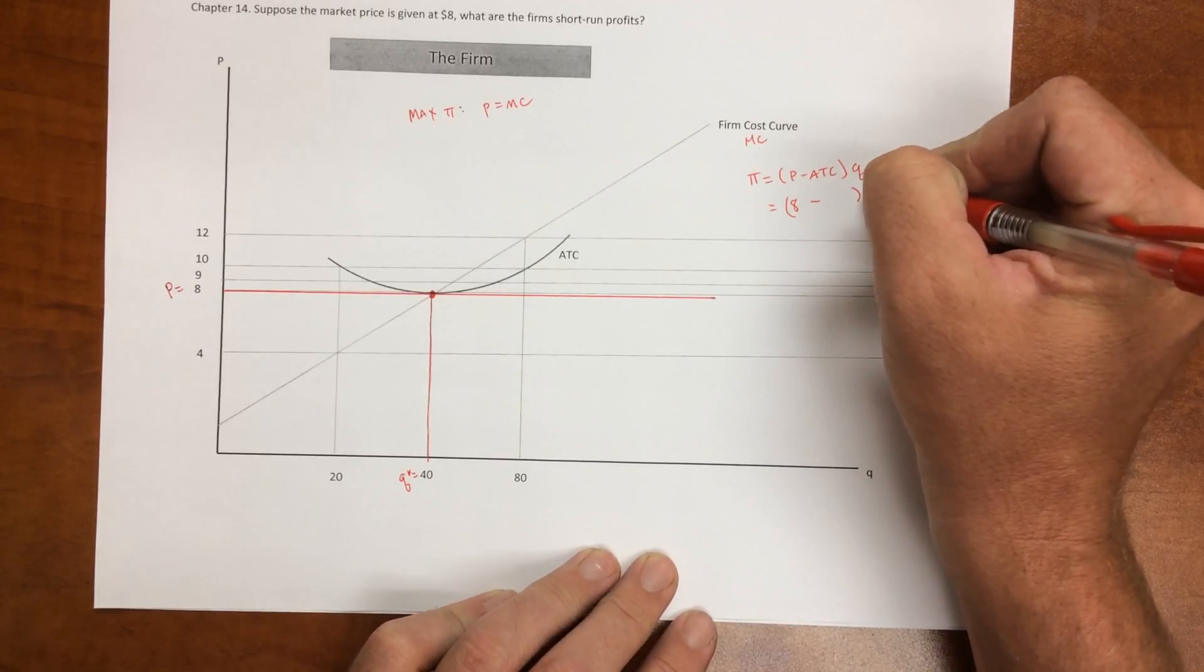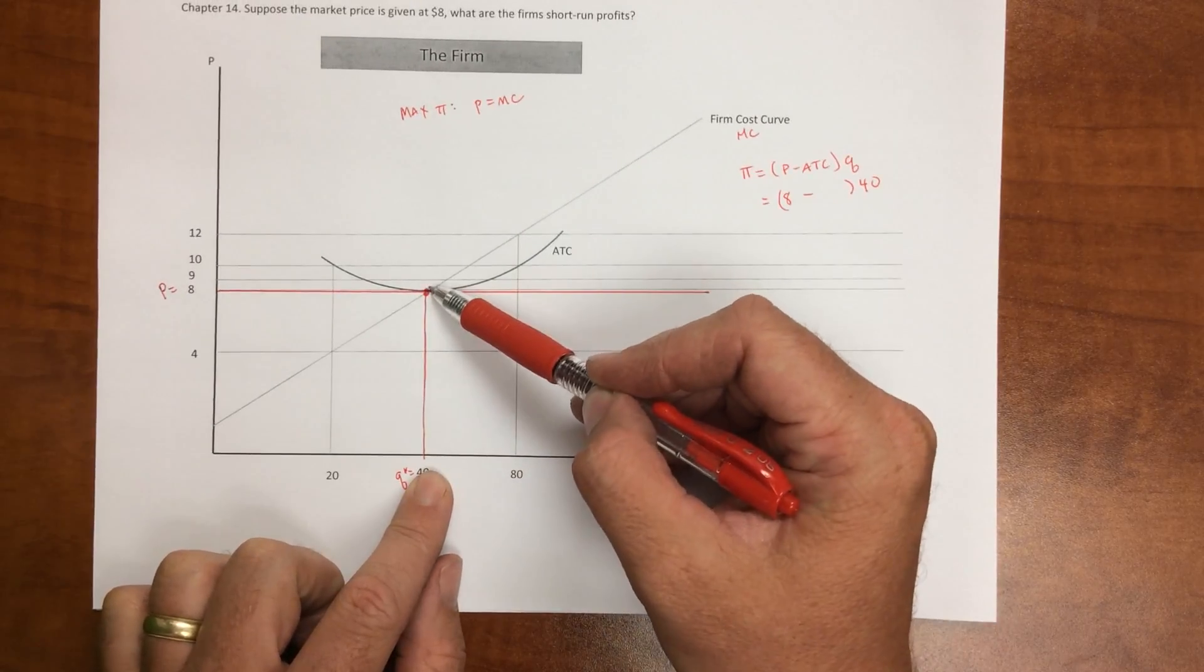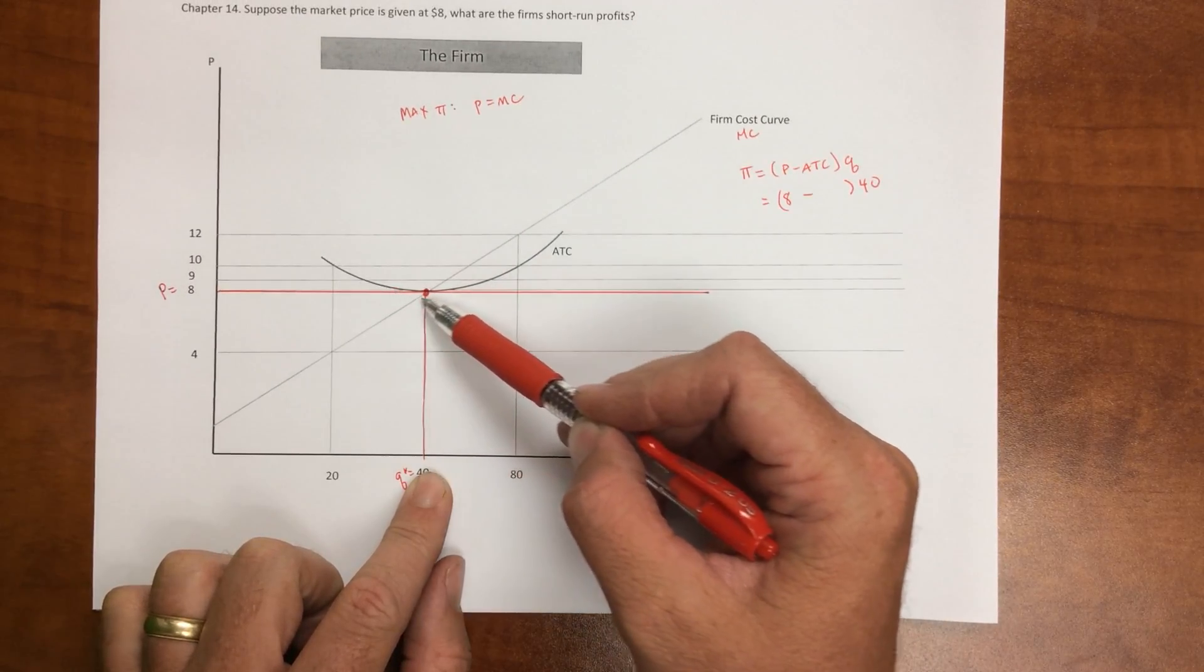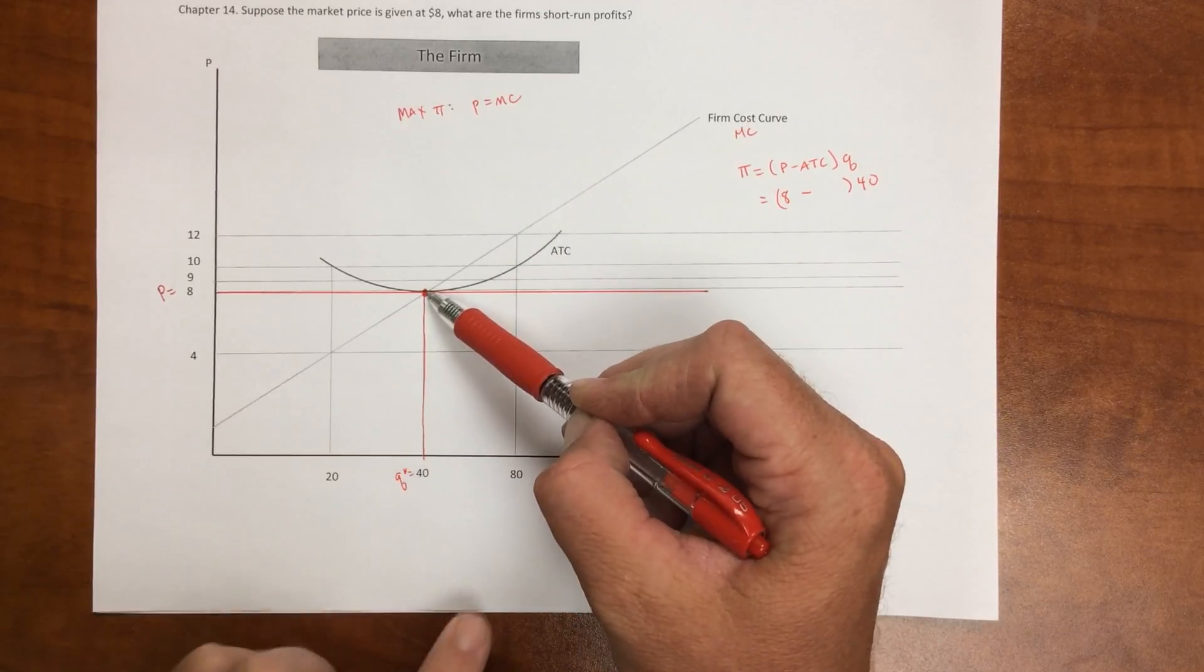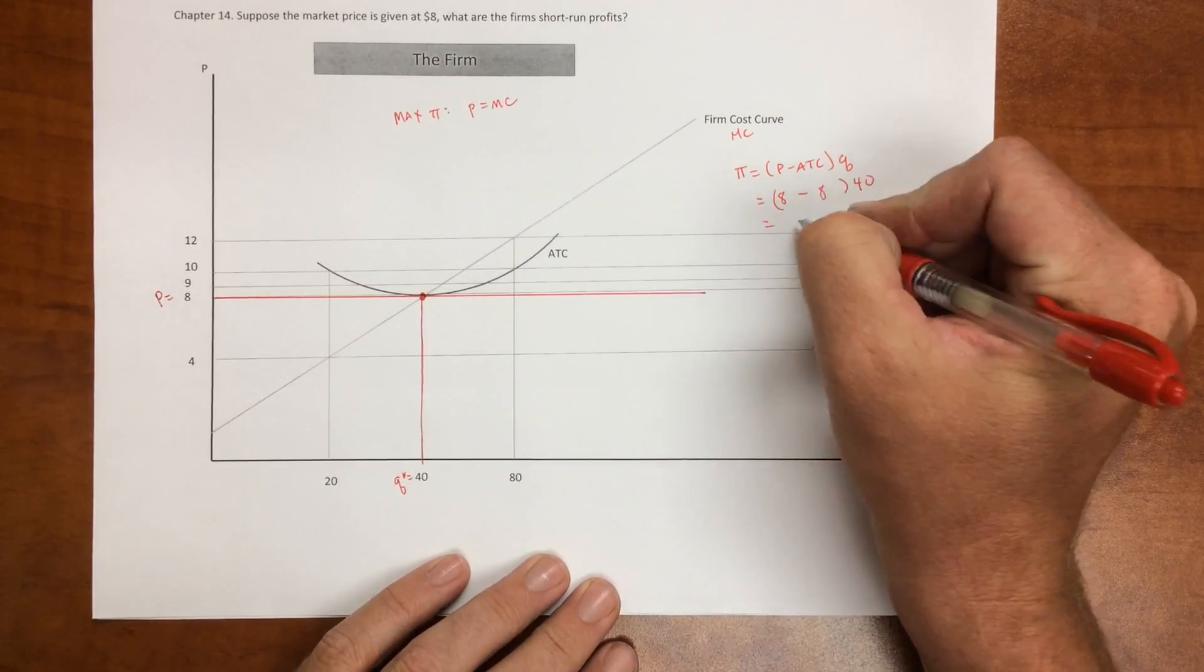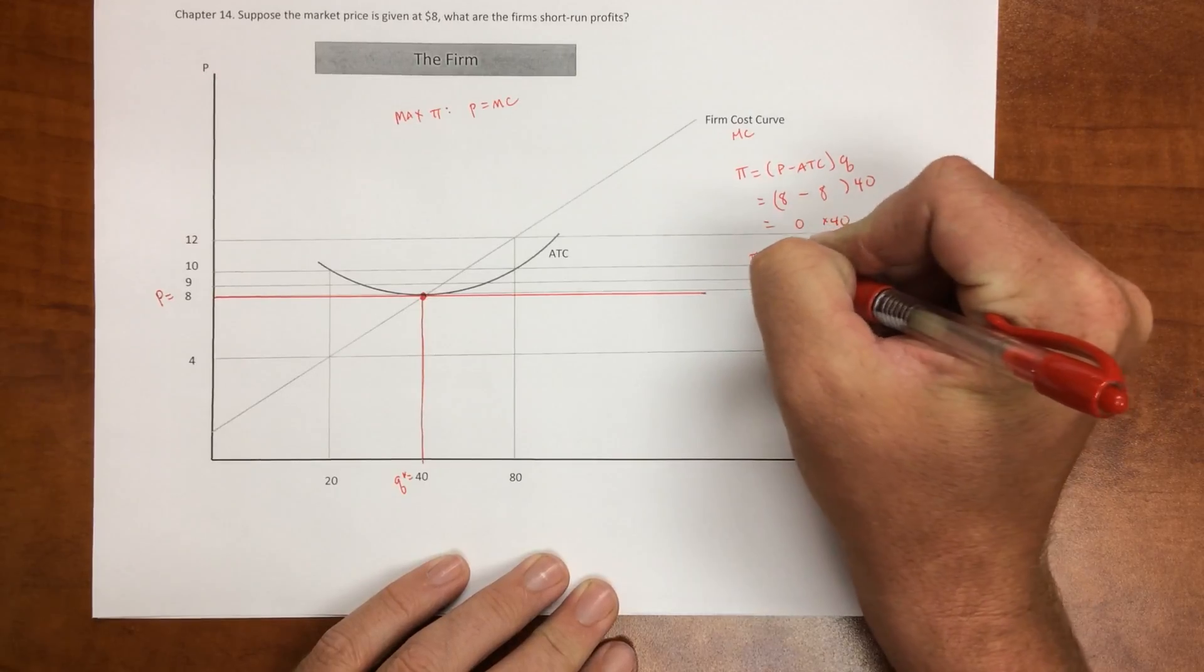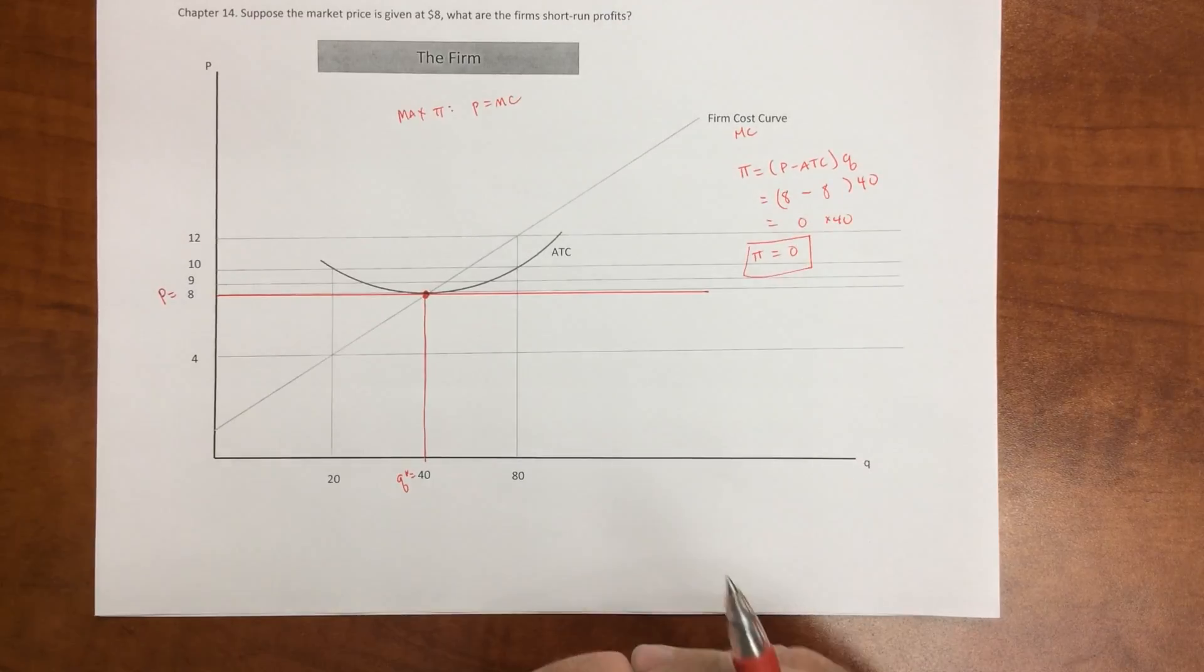So to find the average total cost, we take Q and follow that up until we reach the average total cost curve, which is this smiley face, and it's actually equal at $8. And so that tells us that profits are zero times 40, or economic profits are zero.